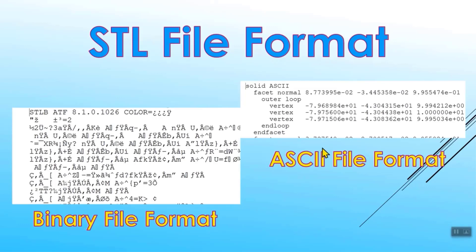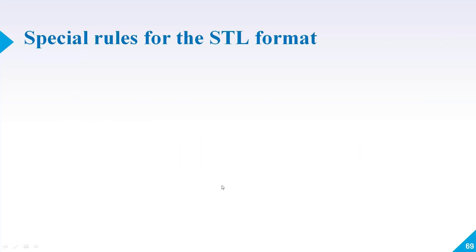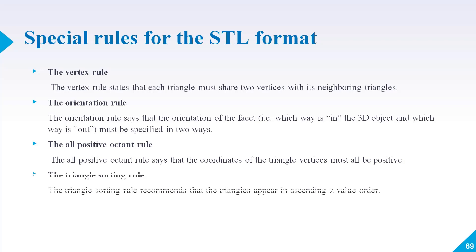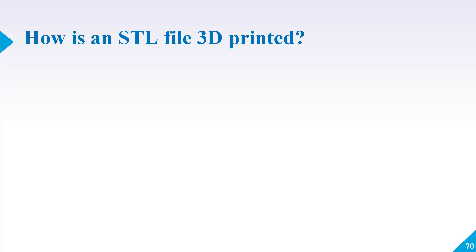There are some special rules for the STL format. The first rule is the vertex rule: each triangle must share two vertices with its neighboring triangle. The orientation rule says that orientation of the facet must be specified in two ways. The all-positive octant rule says that the coordinates of the triangle vertices must all be positive. The triangle sorting rule recommends that the triangles appear in ascending Z-value order.